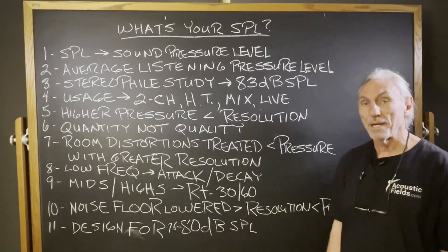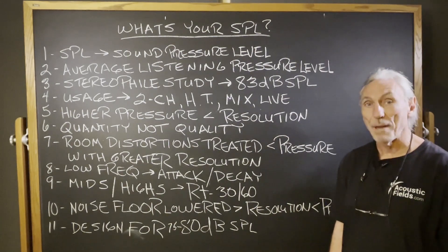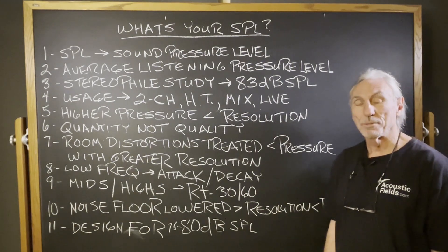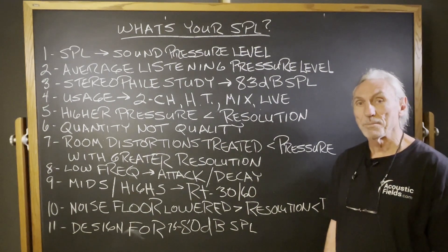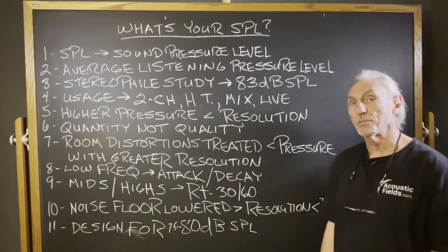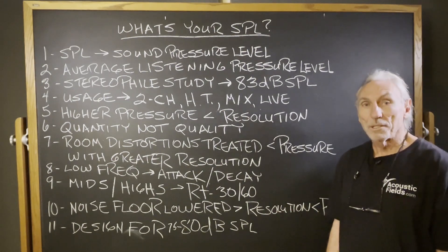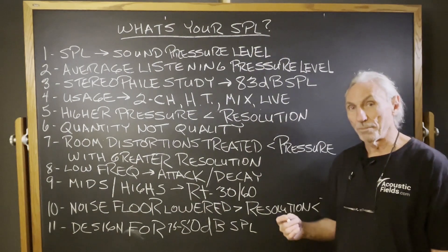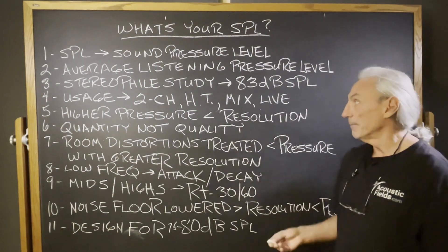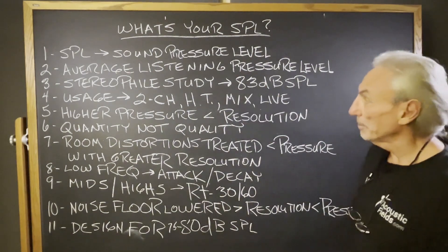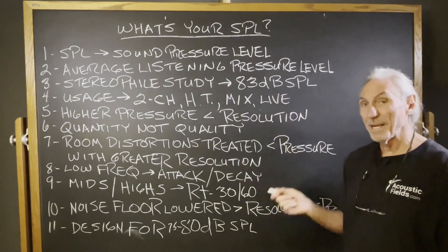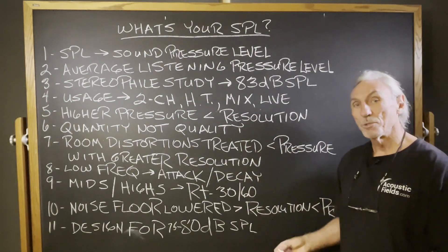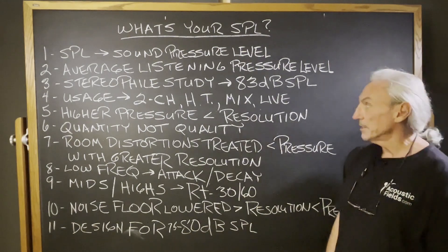There are plenty of apps on the net that you can get, and the Apple Store has many. Just get one of the apps, set your phone by your listening position, and watch the pressure levels that you are comfortable listening at. That'll give you an idea of what your personal preferences are. Many years ago, Stereophile did a study and came up with an average of about 83 dB SPL that most people in two-channel rooms were listening at.